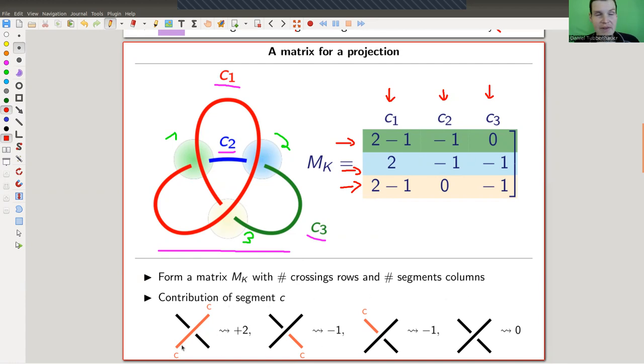So whenever, we'll do that in example life. Whenever something goes over, your arc goes over, it contributes two to the crossing. Whenever it goes under, it contributes minus one. And whenever it's not appearing at all, it just contributes zero.